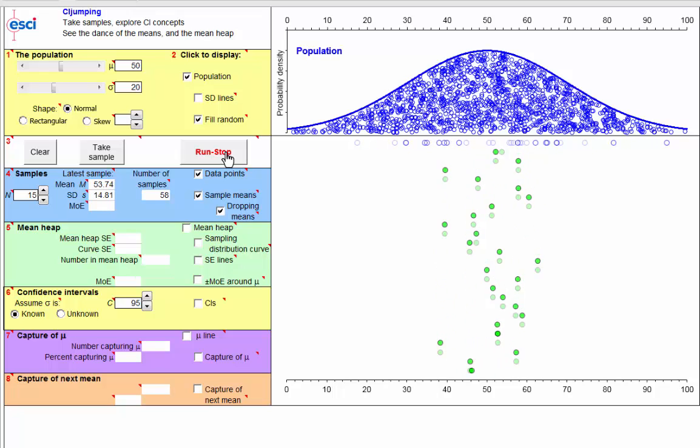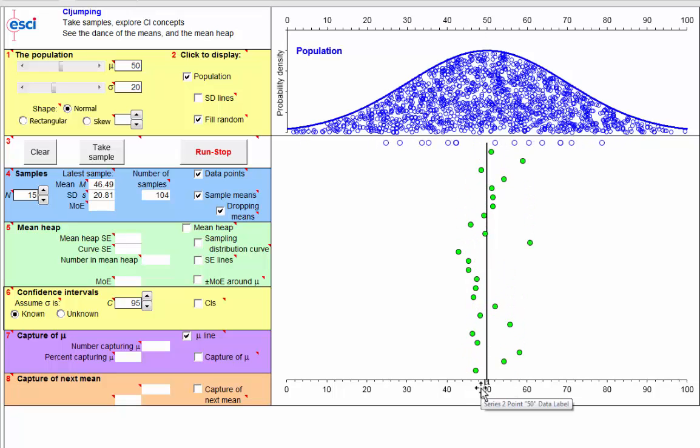Now, here's a question. These are for samples of size 15. Suppose we took samples of size 60. Would the dance be wider or narrower? Would the means of samples of size 60 be closer to the population mean of mu, or further away? Pause the video and think about that for a tick.